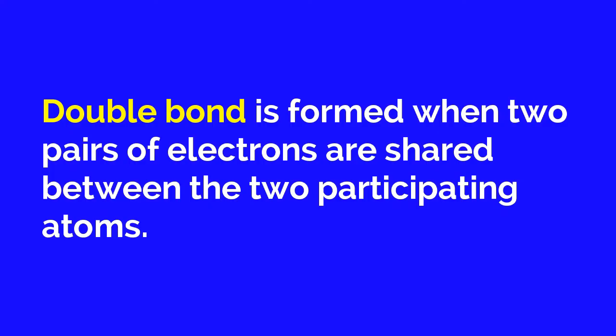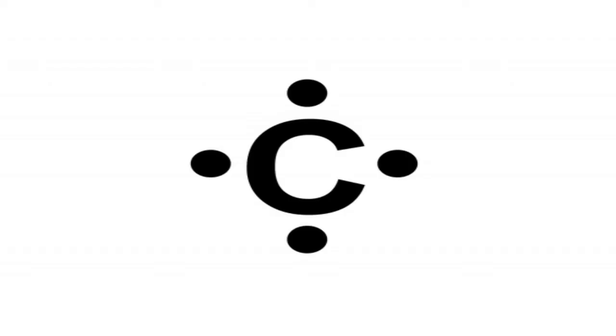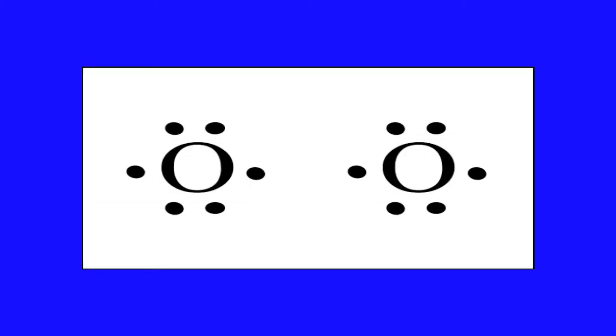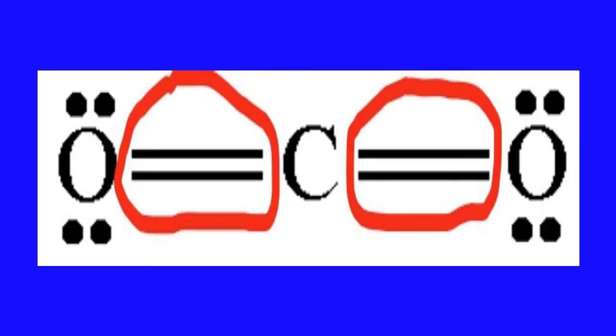A double bond is formed when two pairs of electrons are shared between the two participating atoms. It is represented by two dashes. Double covalent bonds are much stronger than a single bond, but they are less stable. For example, the carbon dioxide molecule has one carbon atom with four valence electrons and two oxygen atoms with six valence electrons each. Each oxygen atom shares its two electrons with carbon, and therefore there are two double bonds in the carbon dioxide molecule.